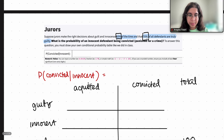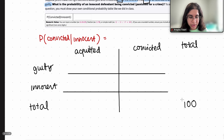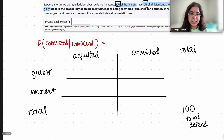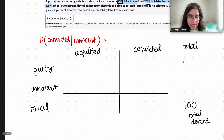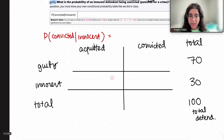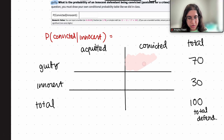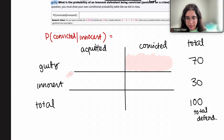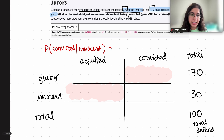It says 70% of all defendants are truly guilty, so if I have 100 total defendants, 70 of them are truly guilty — that's 70% — which means 30 are innocent. Now, the correct decisions are: if you're guilty, you should be convicted, and if you're innocent, you should be acquitted — set free. The jurors make the right decision 60% of the time.